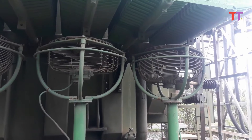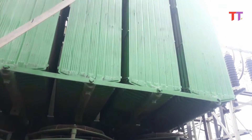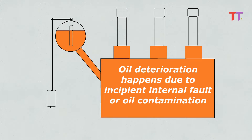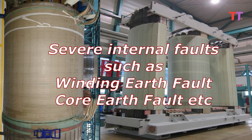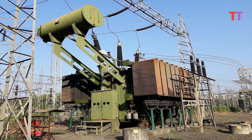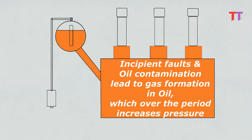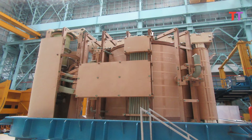In the first case, temperature of oil rises due to cooling system failure or transformer overloading, and oil deterioration happens due to incipient internal fault or oil contamination. In the second case, severe internal faults occur such as winding earth fault, core fault, etc. Due to all such mentioned cases, pressure inside the transformer increases. Incipient faults and oil contamination lead to gas formation in oil, which over the period increases pressure.